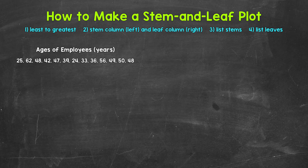Stem and leaf plots are a way for us to organize and display data. So we take the data — just a list of numbers — and we organize everything in a table called a stem and leaf plot. This is a way for us to present the data. Let's jump into our example and see exactly how to do this.